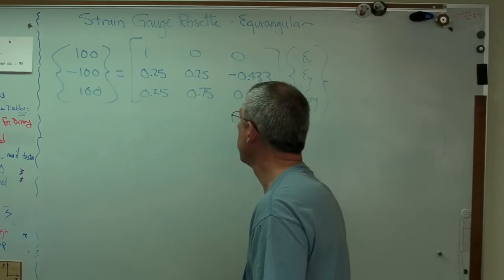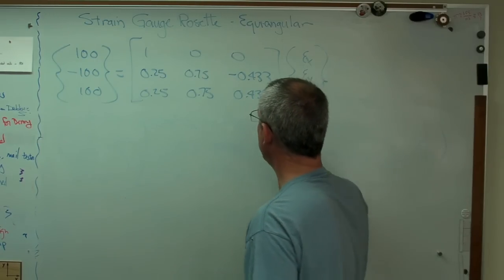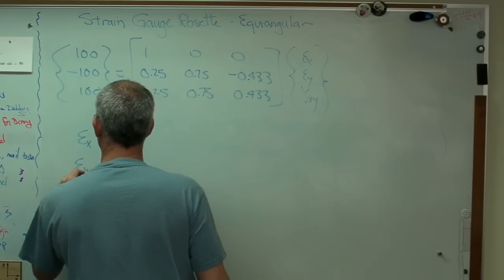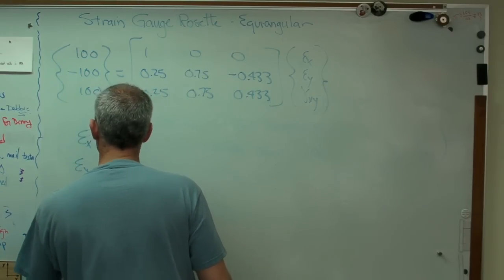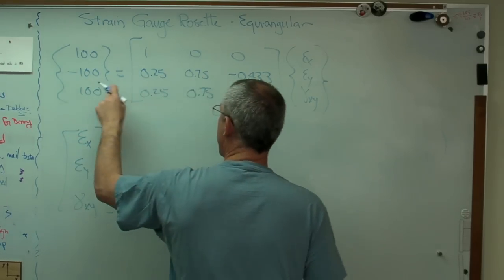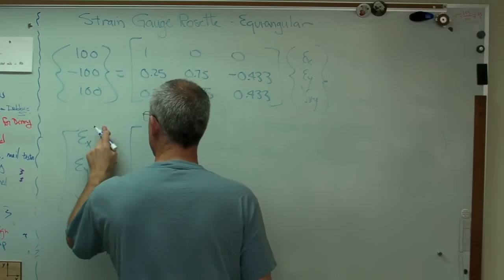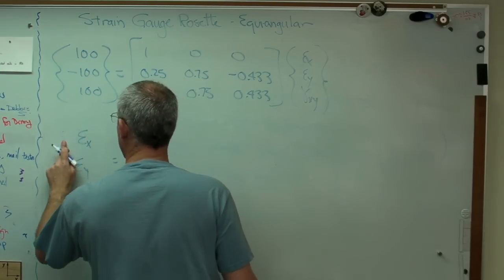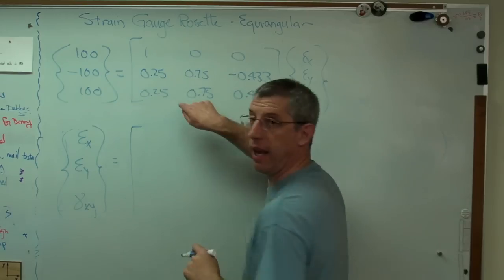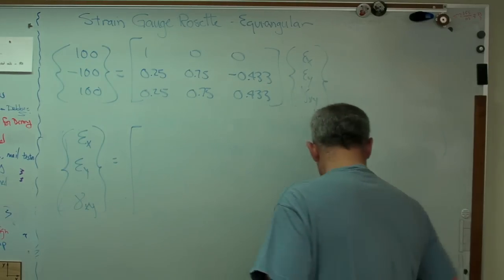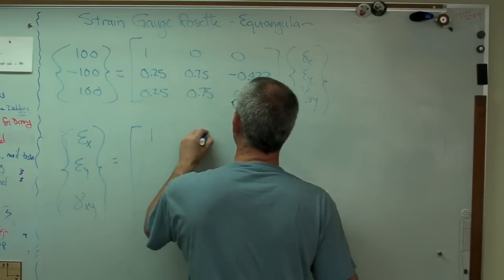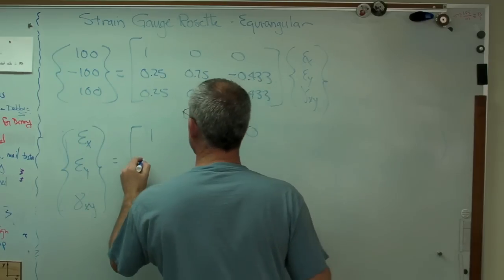That makes sense. All right. So all I got to do is invert that. And I'm going to say now that epsilon X, epsilon Y, gamma XY is the inverse of that times that. Well, the inverse here, I'm going to write that out for you. So in case you're checking this from where you are, you can make sure you're getting the same numbers I got.